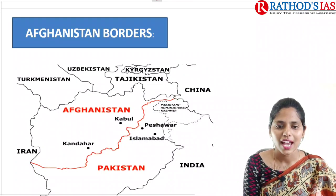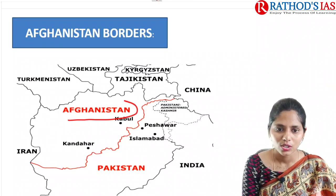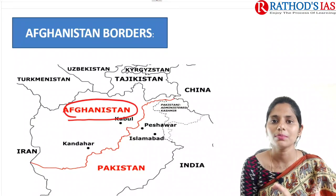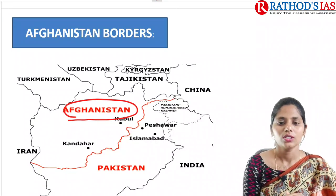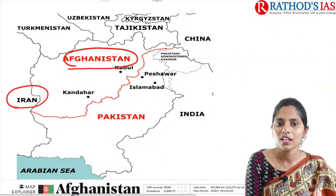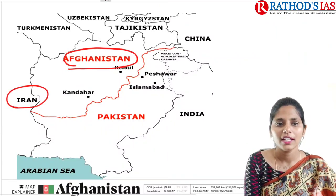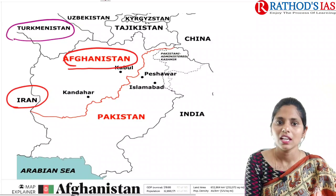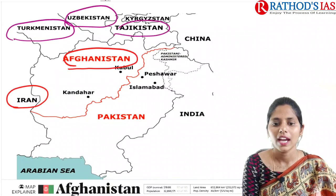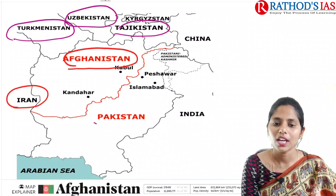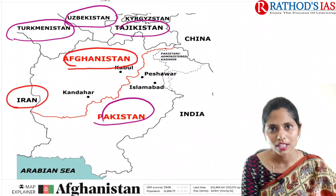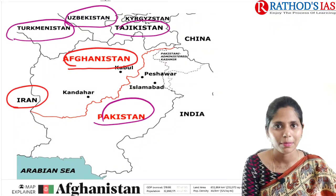So here we have Afghanistan. Let us try to see the countries which are sharing boundary with Afghanistan. Here you can see Iran is sharing boundary. And here we have Turkmenistan, Uzbekistan, Tajikistan, and Pakistan. And even India is also sharing boundary, but if you see on the map, we are sharing.